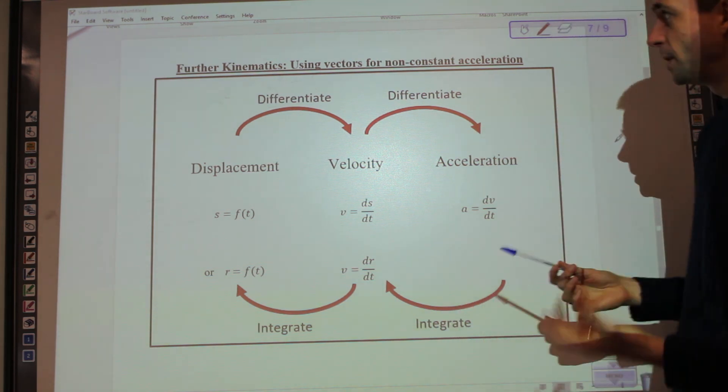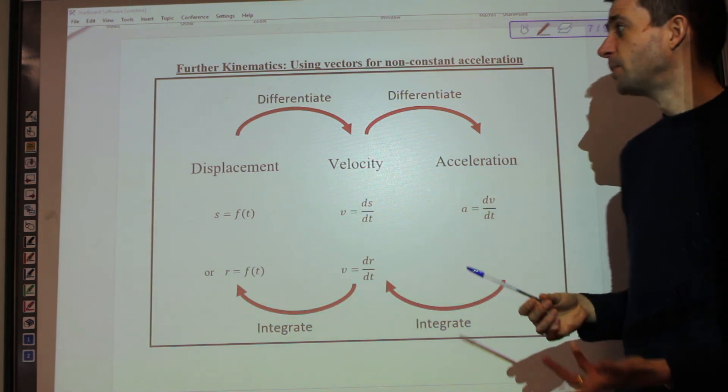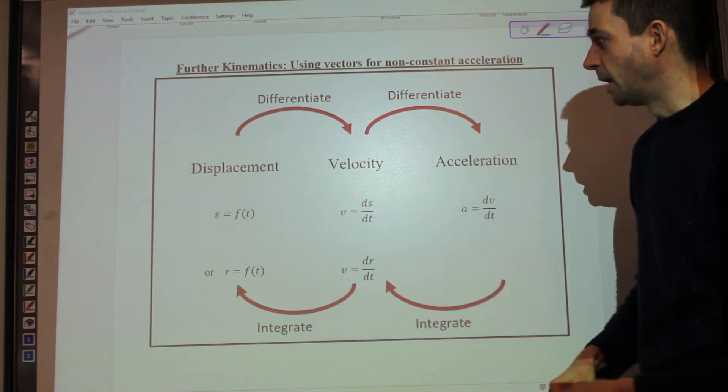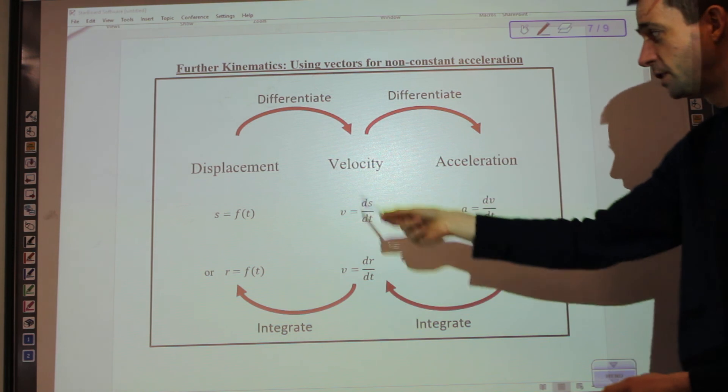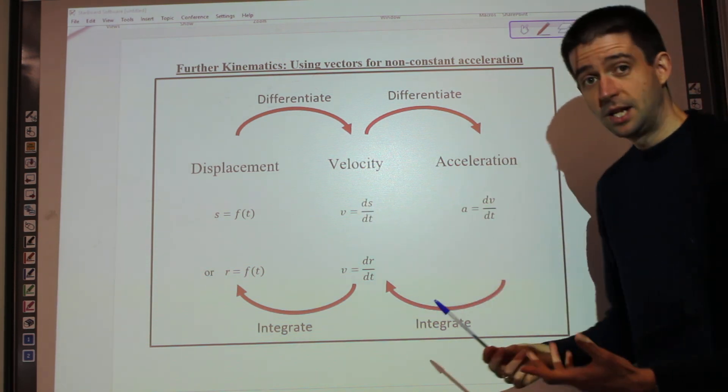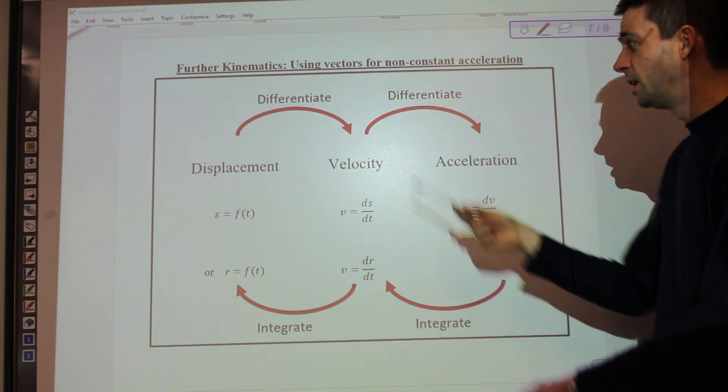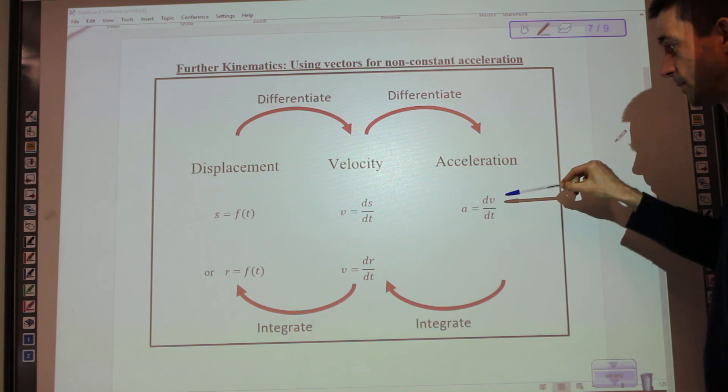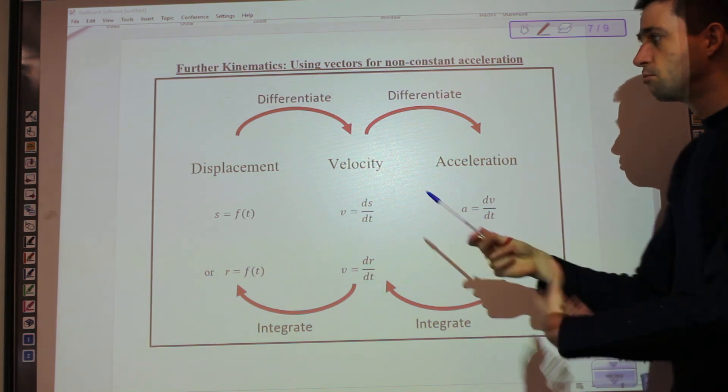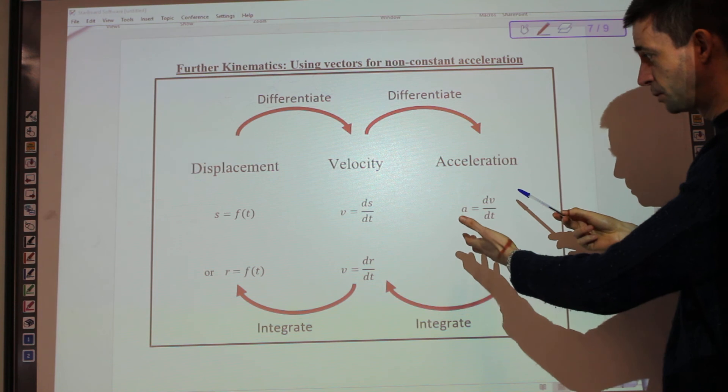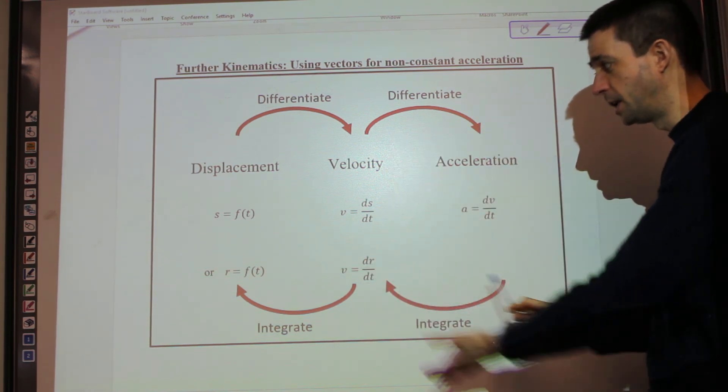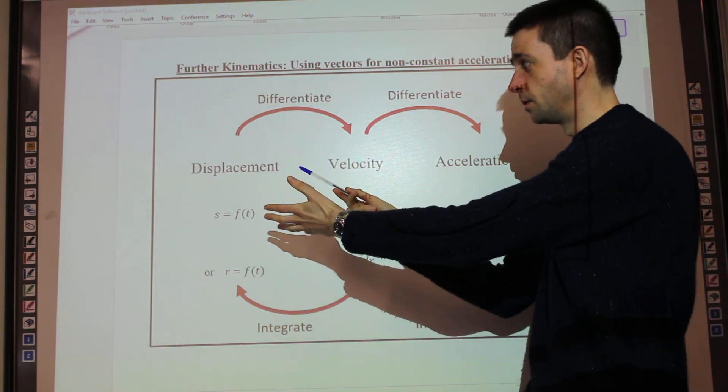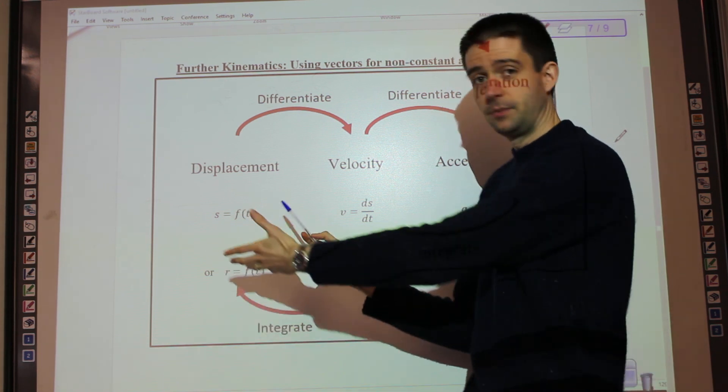So what we know about non-constant acceleration so far is we know that velocity is the rate of change of displacement. And therefore, if you have an expression for displacement, you can differentiate to get your velocity. Similarly, the definition of acceleration is the rate of change of velocity. So if you differentiate velocity, you get acceleration, dv dt. By that same logic, working backwards, if you know acceleration and you want to find an expression for velocity, you can integrate. Similarly, if you have an expression for velocity and you want displacement or position, then you can integrate.